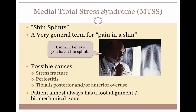Shin splints, or medial tibial stress syndrome, is a common exercise-related problem. The term refers to pain along the inner edge of the shin bone or tibia, involving inflammation of the muscles, tendons, and bone tissue around the tibia. Pain typically occurs on the inner border of the tibia where the muscles attach to the bone. Shin splints develop when the muscle and bone tissue — the periosteum — become overworked by repetitive activity. This condition often occurs after sudden changes in physical activity such as increasing frequency, duration, or intensity. Possible causes include stress fracture, periostitis, and tibialis posterior and/or tibialis anterior overuse.